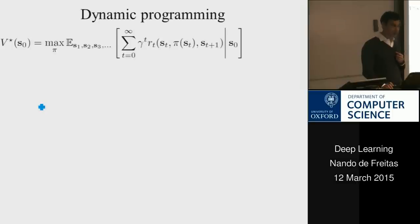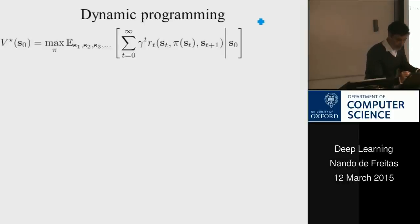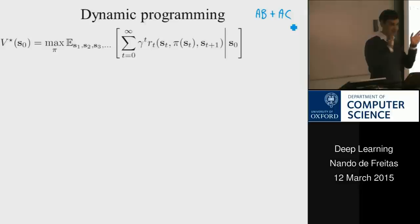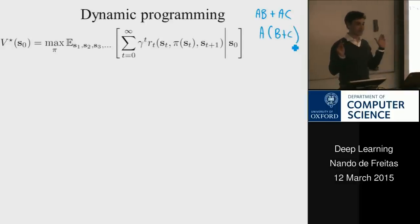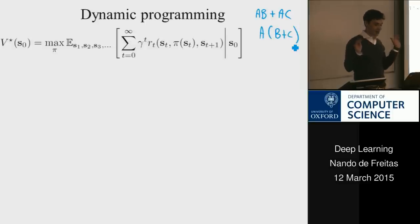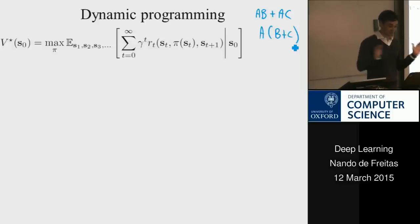What we're going to do is called dynamic programming. To summarize it briefly: if you're trying to compute AB + AC, don't compute it that way — compute A(B + C) instead. We all know this factoring trick, and that's exactly what we're going to do, but the expressions are much bigger with more symbols.